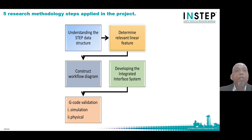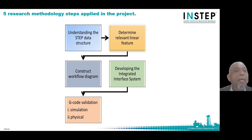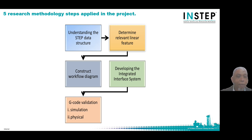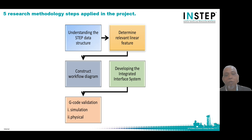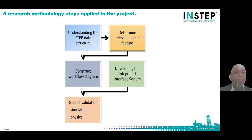The research methodology steps applied in this project — there are five altogether. Number one: understand the STEP 5 structure. Number two: determine relevant linear features. Number three: construct workflow diagram. Number four: develop the integrated interface system. And number five: G-code validation, wire simulation, and physical machining.